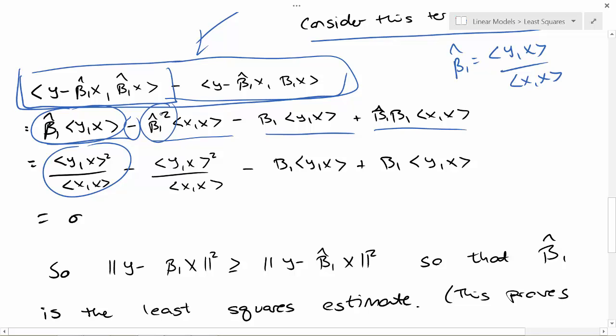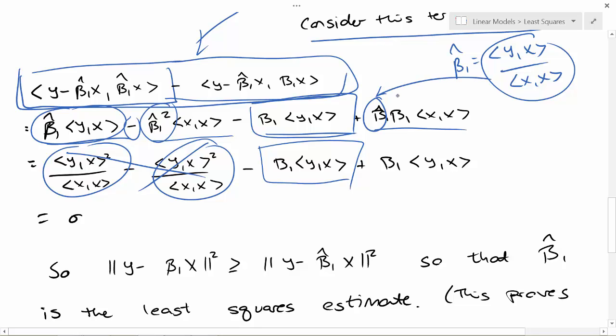This quantity right here you can just show is exactly the same thing right here, and so these two cancel out. Then beta_1 times the inner product of y and x, I'm not going to do anything with that. And then beta_1 hat, if I plug its formula in there, then I get beta_1 times the inner product of y and x. Again, negative sign here, positive sign here, they both cancel out and we get 0.